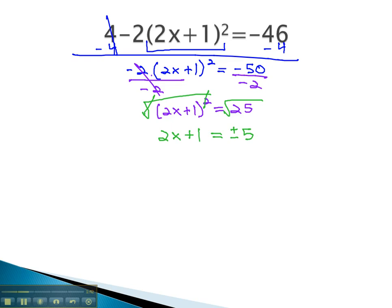We can then continue solving this problem by subtracting 1 to get 2x = -1 ± 5, and then dividing by 2. x = (-1 ± 5) / 2.